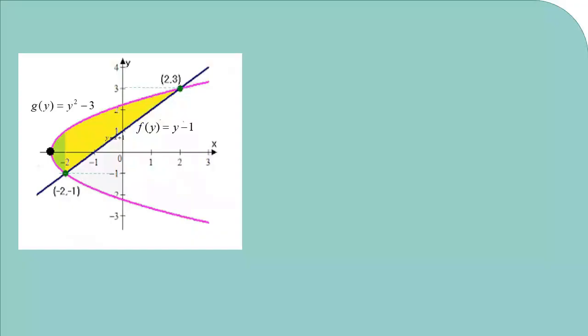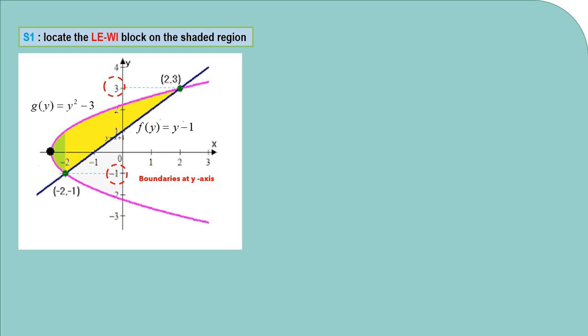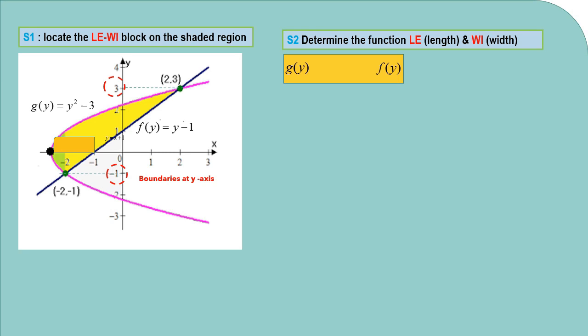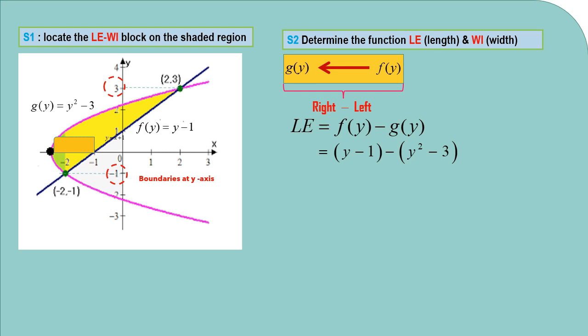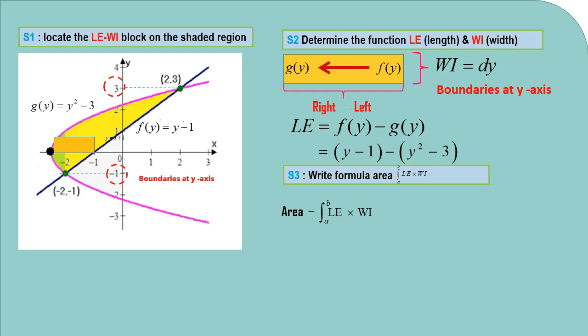Next example: Step 1 — locate the Luwi block on the shaded region. Since we use the boundaries at the y-axis, y = −1 and y = 3, we locate the Luwi block horizontally. Step 2 — determine the function length and function width. Based on the block, we notice that the right function is f(y) and the left function is g(y). So the length is f(y) − g(y) and the width is the small change of y, denoted as dy. Step 3 — write the formula for the area as the integral of length times width, and integrate it with respect to y to get the value of the area.